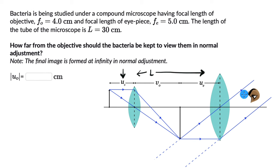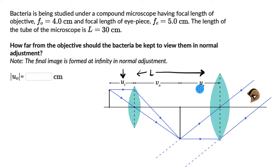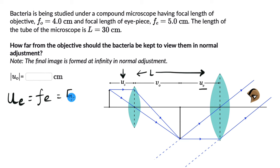The question we ask ourselves is: where should the object be placed in front of a convex lens so that the image is formed at infinity? The answer is the object should be at the focal length. So this image, which is acting as the object for the eyepiece lens, should be formed at the focal length of the eyepiece lens. The object distance for the eyepiece lens becomes the focal length, which is 5 centimeters.